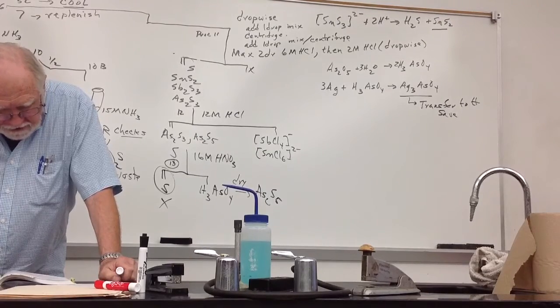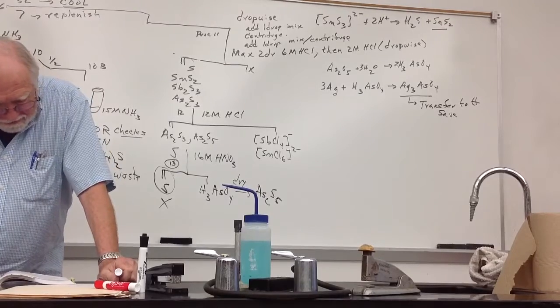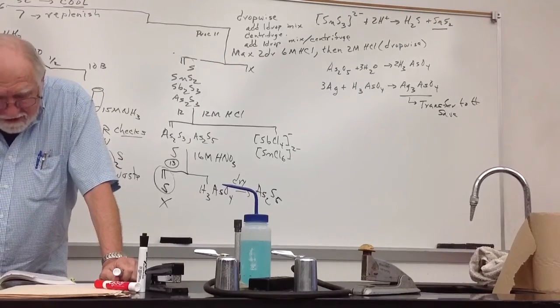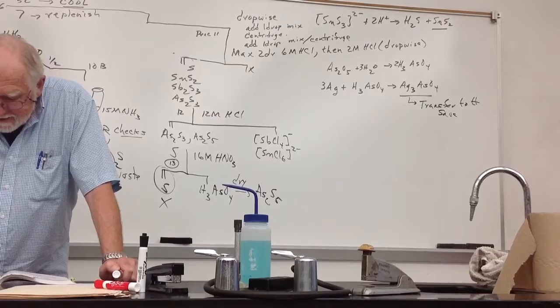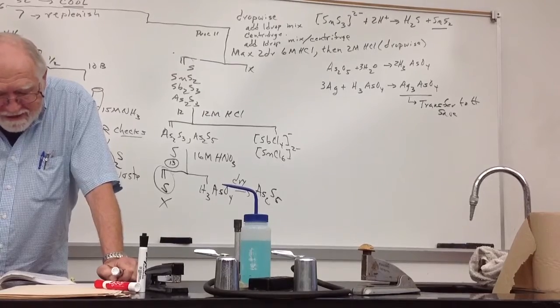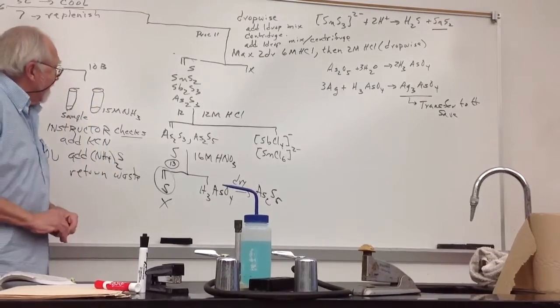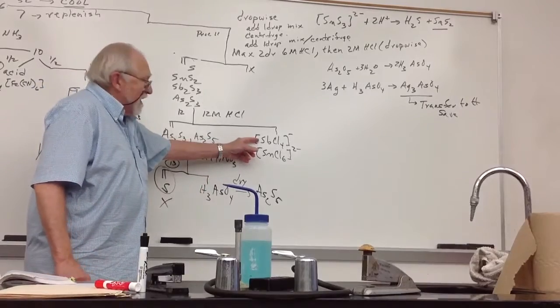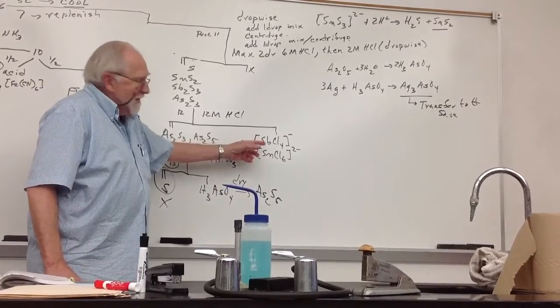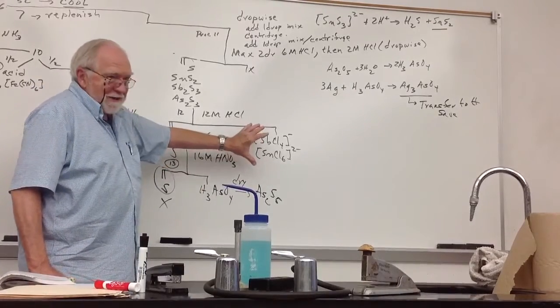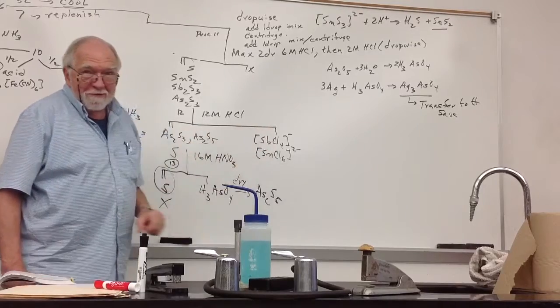Never going to proceed your 14, because that's the confirmatory test, that's silver arsenate. But it says, the decantate from procedure 12, way back here. This thing that I didn't say anything. It's sitting there in a test tube. Make sure you label it before you put it away.